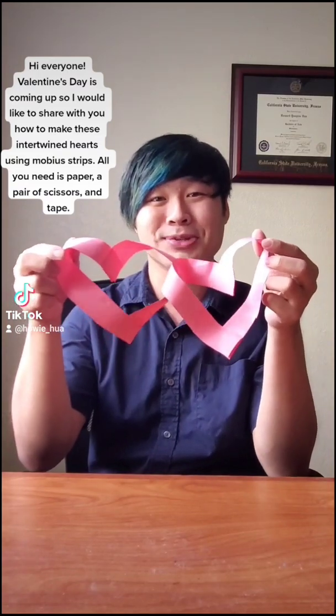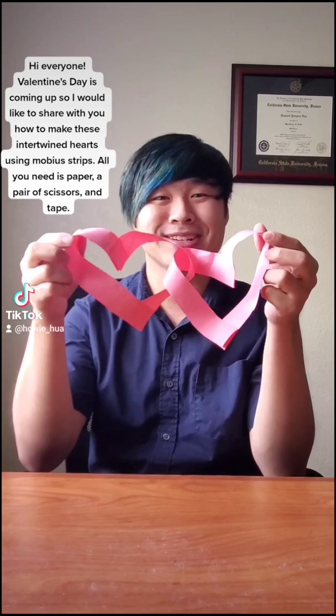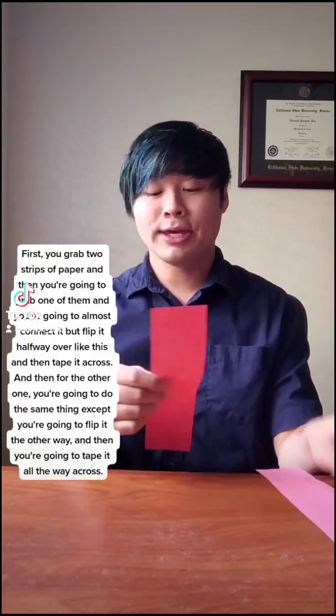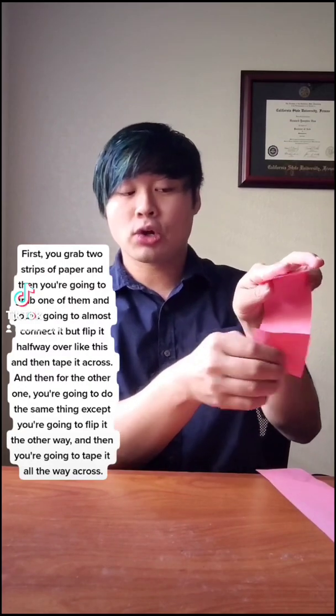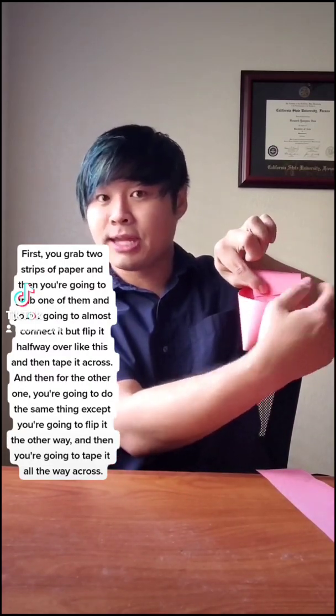Hi everyone! Valentine's Day is coming up, so I would like to share with you how to make these intertwined hearts using Mobius strips. All you need is paper, a pair of scissors, and tape. First, you grab two strips of paper, and then you're going to grab one of them, and you're going to almost connect it, but flip it halfway over like this, and then tape it across.